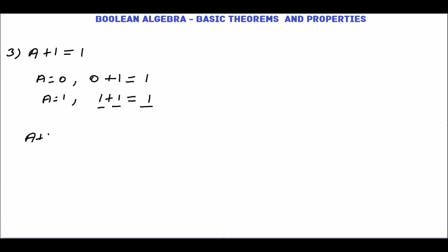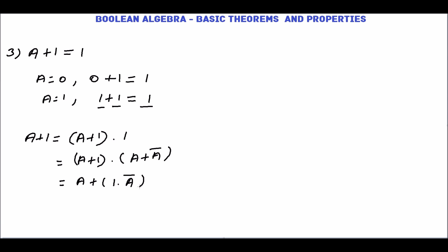Take a + 1. We can write a + 1 = a + 1 · 1. Since 1 = a + ā, this becomes a + (a + ā). Based on the distributive law we can write this as (a + 1) · (a + ā). Now 1 · ā = ā, giving a + ā, and a + ā = 1. So a + 1 = 1.